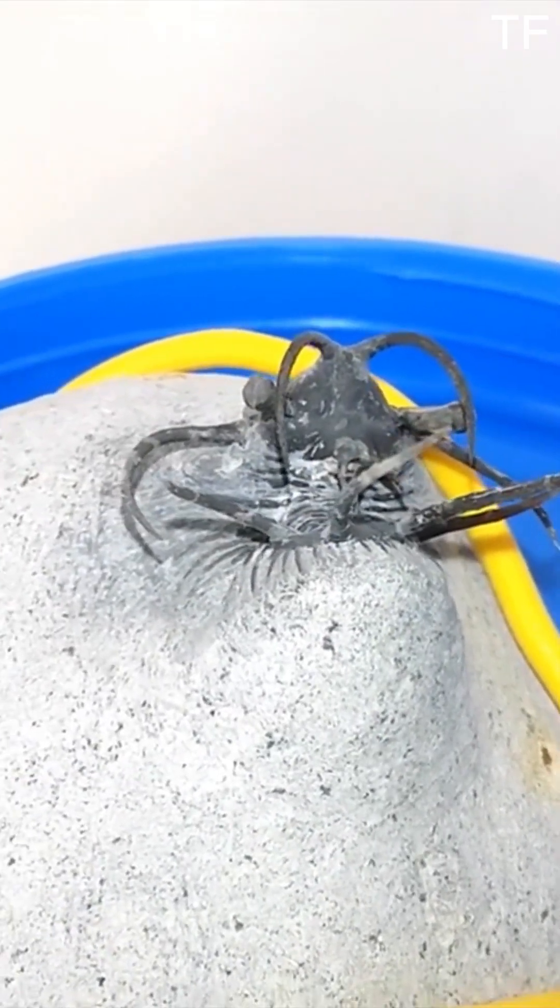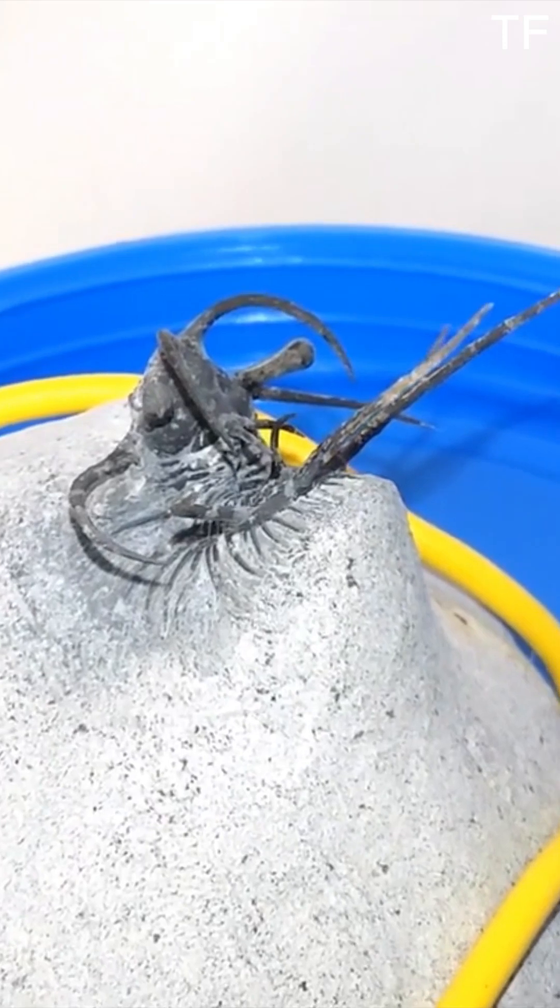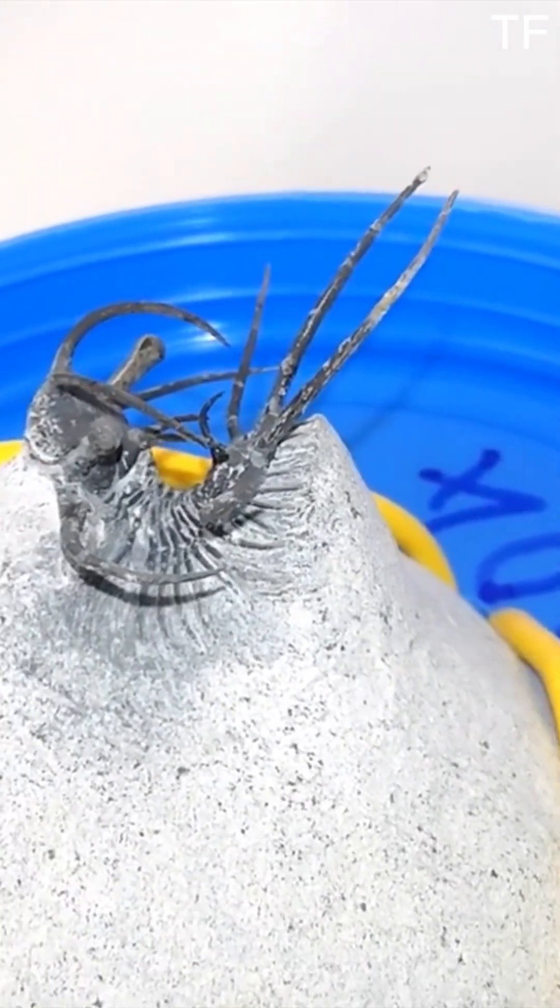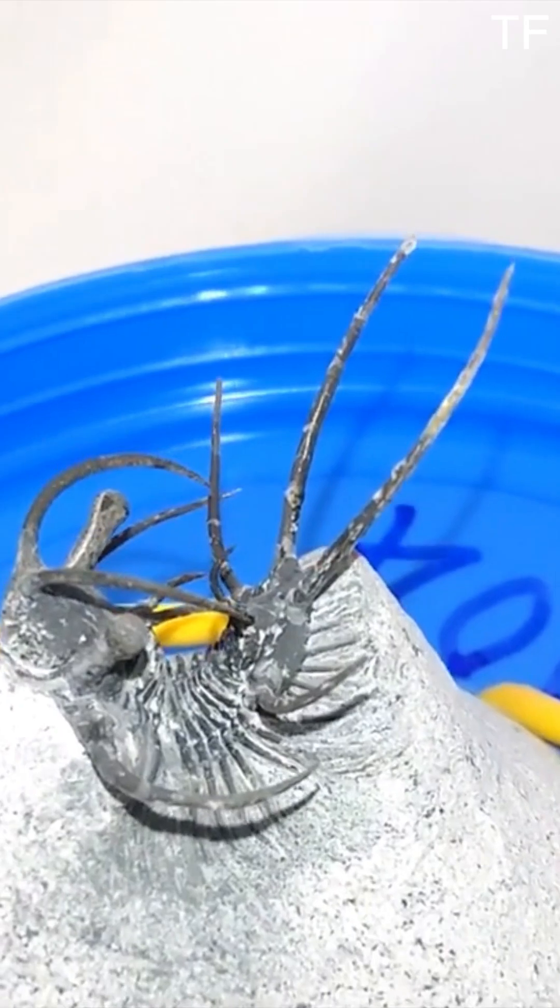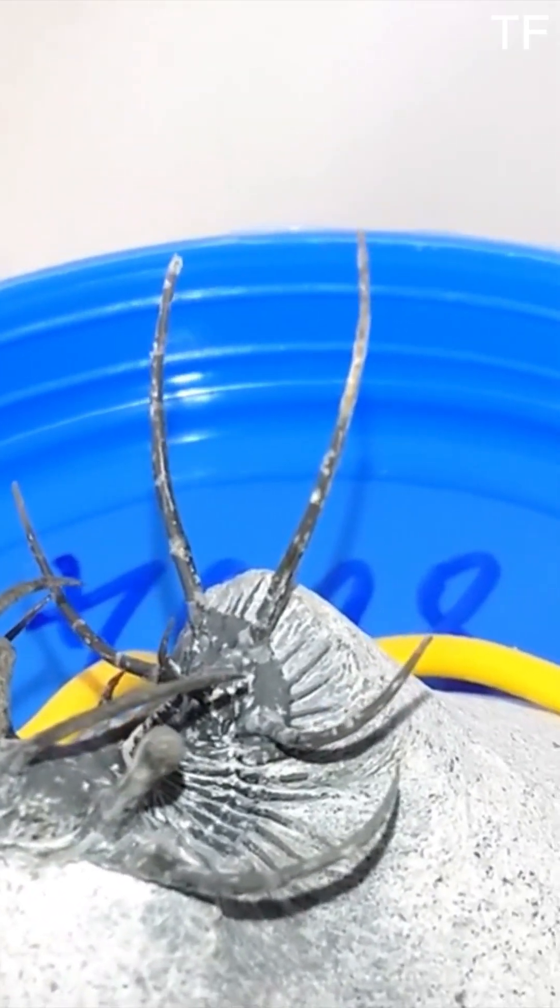What makes the Ceratarges Ares so special? For starters, its preservation is nothing short of miraculous. The fine details of its exoskeleton, the delicate spines, and even the texture of its shell are perfectly intact. But it's not just about beauty, this fossil is a scientific gold mine.